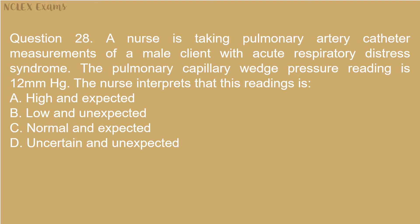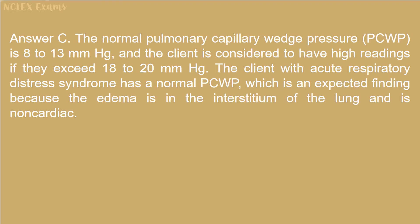Question 28: A nurse is taking pulmonary artery catheter measurements of a male client with acute respiratory distress syndrome. The pulmonary capillary wedge pressure reading is 12 mmHg. The nurse interprets this reading as: A) High and expected, B) Low and unexpected, C) Normal and unexpected, D) Uncertain and unexpected. Answer C. The normal PCWP is 8 to 13 mmHg, and the client is considered to have high readings if they exceed 18 to 20 mmHg. The client with ARDS has a normal PCWP, which is an expected finding because the edema is in the interstitium of the lung and is non-cardiac.